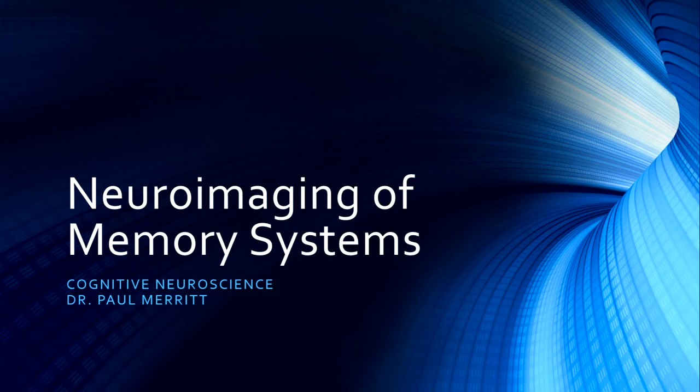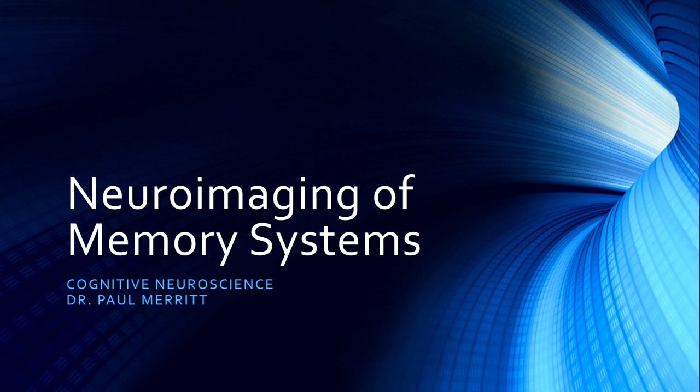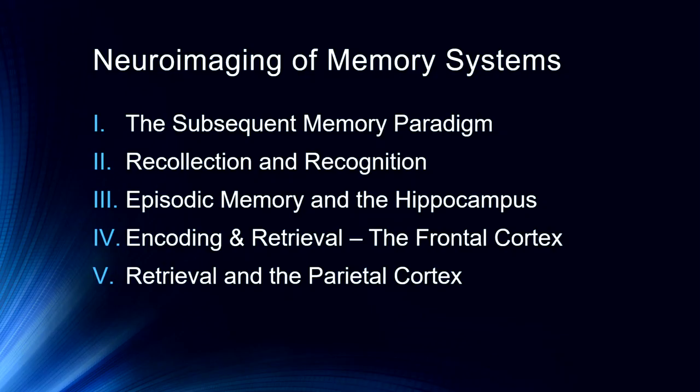Hello and welcome to our next lecture in the Neuroscience of Memory for my Cognitive Neuroscience course. In the previous lecture we talked about the anatomical features associated with memory and dove into some specifics about episodic memory versus semantic memory. I want to now get into some neuroimaging studies, principally studies of episodic memory, and some interesting work about the hippocampus and frontal and parietal lobes.